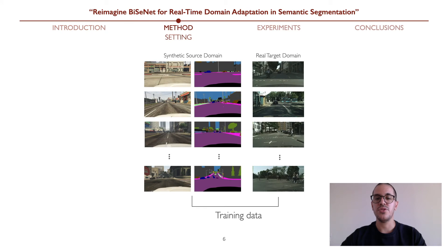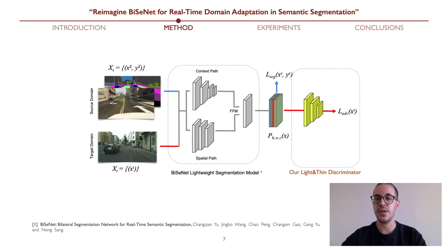Our proposed algorithm reimagines the BISNet segmentation model, tailoring it to the unsupervised domain adaptation task. During training, we have at our disposal a set of semantically annotated images corresponding to the source synthetic domain and a set of unlabeled images corresponding to the target real-world domain. Due to the lack of annotations for the real-world scenario, we align features from the source and target domains in an adversarial manner. The adversarial training uses features extracted from the segmentation model and domain predictions from a domain discriminator, where both models engage in a min-max game: the discriminator guesses the domain of a feature, while the segmentation network attempts to fool the discriminator by making features from both domains similar.